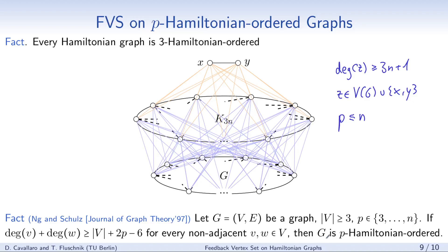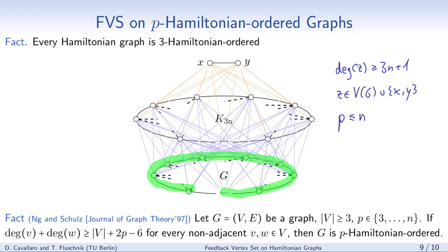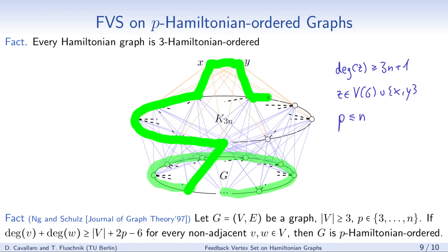Since we additionally require a Hamiltonian cycle in the input, we can easily obtain one in the new graph. Starting from the Hamiltonian cycle in G, we route it through the K_{3n} part, through X and Y, and back, yielding a Hamiltonian cycle. This finishes the proof idea for the NP-hardness of feedback vertex set on p-Hamiltonian-ordered graphs, even if a Hamiltonian cycle is given in the input.